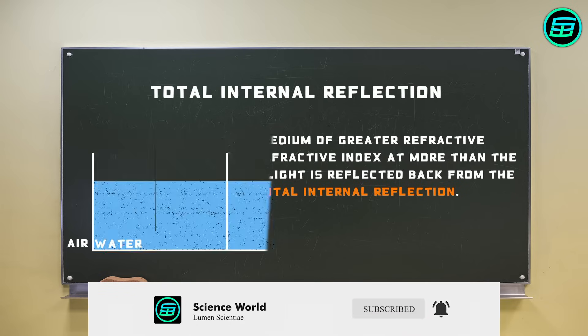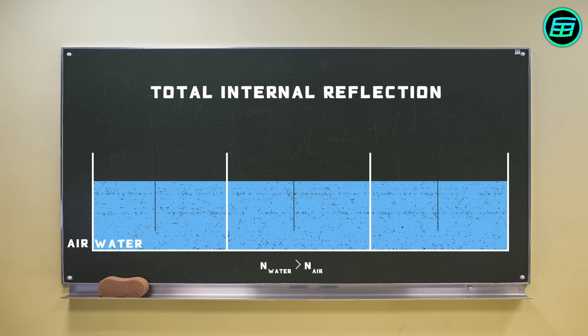For example, if light travels from water to air at an angle greater than the critical angle for water to air, which is 46.8 degrees, it'll be reflected back into the water.